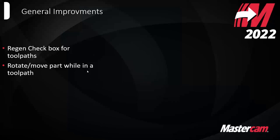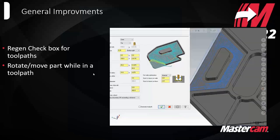Lathe or standard mill tool paths regenerate very quickly on today's computers. Another small quality of life improvement: for anyone using a space mouse, trackball, or third-party left-hand mouse, you could rotate the part in the background before — but now you have full access to rotate and move a part around while you're in a tool path window.